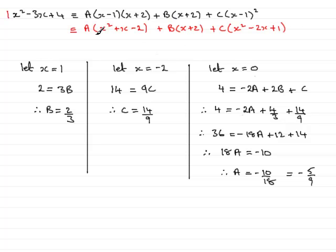And if I expanded each of the brackets, what I would have is ax² + ax - 2a. And then on this one, we would have bx + 2b. And then finally, expanding this bracket would give +cx². And then -2cx, so that'd be -2cx. And then finally, +1c, or just simply c.